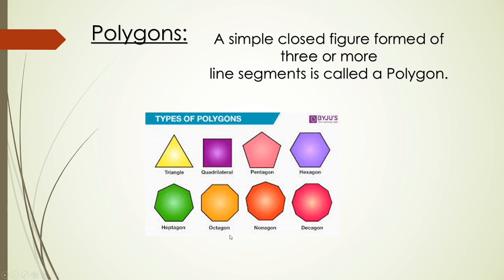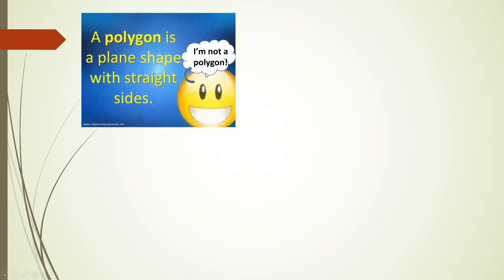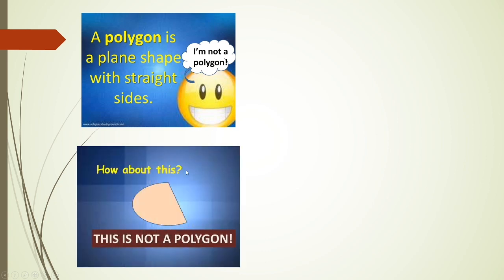We can see examples of polygons here. A circle cannot be called a polygon because a polygon is a plane shape with straight sides — it is made up of only line segments, not curves. So this circle is not a polygon. Similarly, this curved shape is also not a polygon because it is not made up of line segments; it is made up of curves.